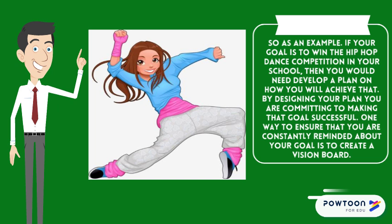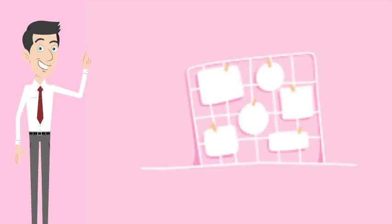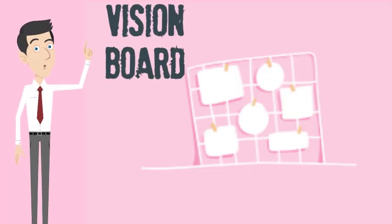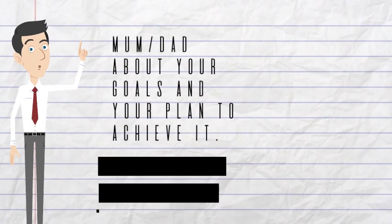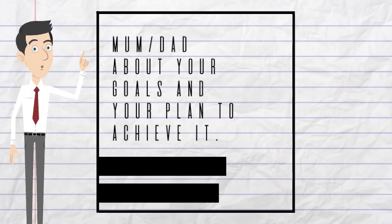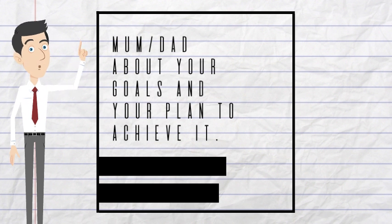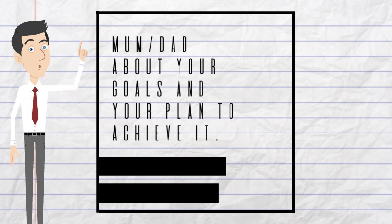One way to ensure that you are consistently reminded about your goal is to create a vision board. A vision board is a tool that is used to clarify and helps you to concentrate on your goals. It's a board that you create that displays your goal in pictures, using color and making it fun. This is your daily reminder of your goal and it will keep you focused. Talk to a friend, a teacher, or your parents about your goals and your plan to achieve them, and use the layout activity on your screen to plan your goal.